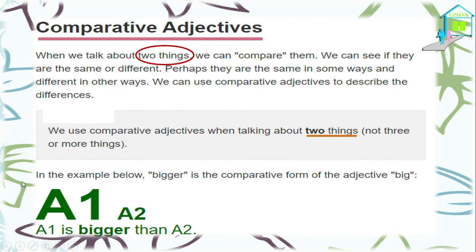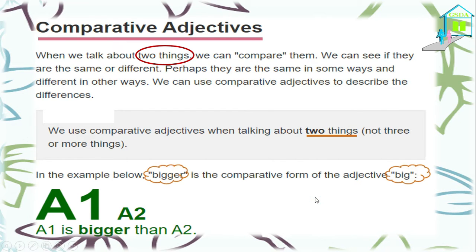Let's see this example. We have here: A1 is bigger than A2. It's obvious that A1 is bigger than A2. So 'bigger' here is the comparative form of the adjective 'big.' This is the comparative form of the adjective 'big,' which is 'bigger.'